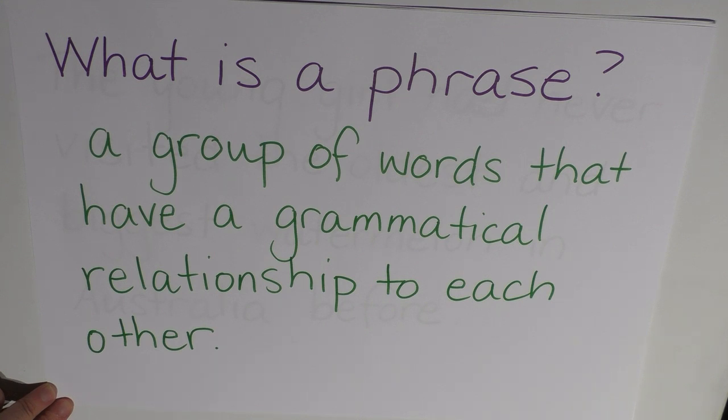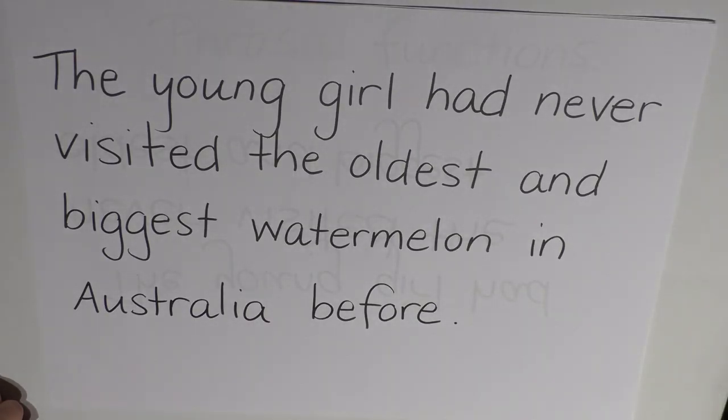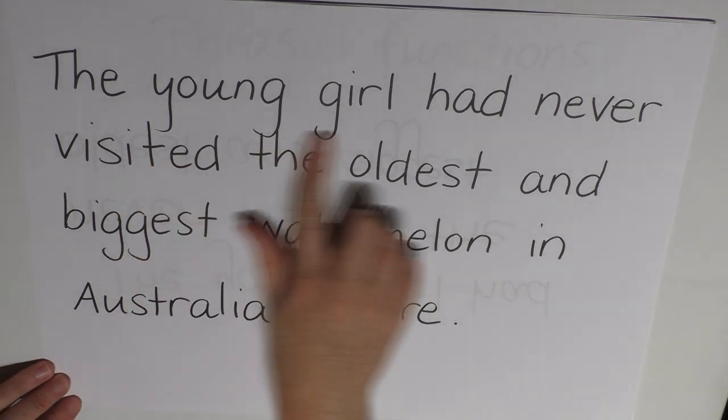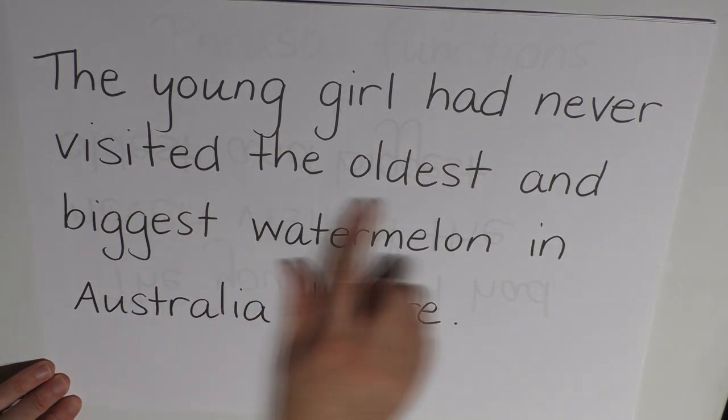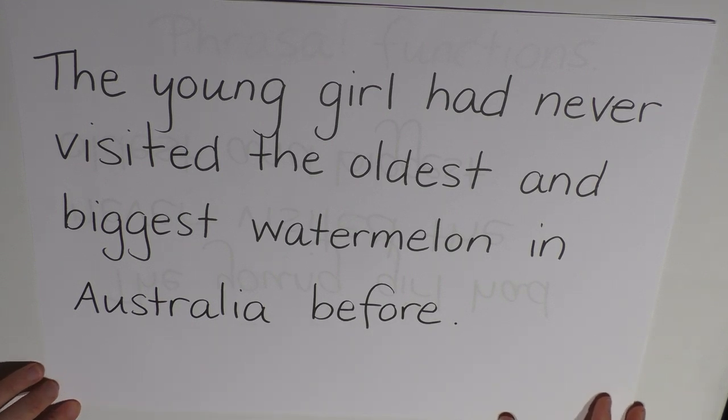So I think that you can actually very naturally break sentences down into their phrases. So I'll give you an example and if you like you can pause the video here and have a go at breaking them down into their phrase classes and then I'll go through them. So here we go. The sentence is, the young girl had never visited the oldest and biggest watermelon in Australia before. So can you break this down into the different phrases and label their phrasal class? Have a go.